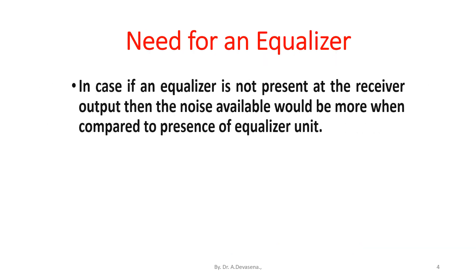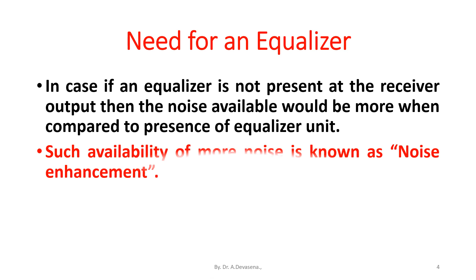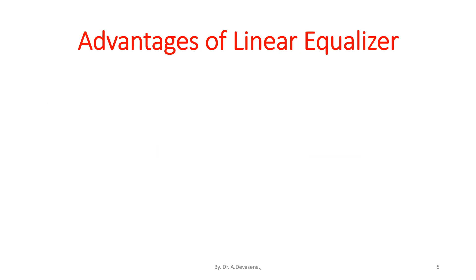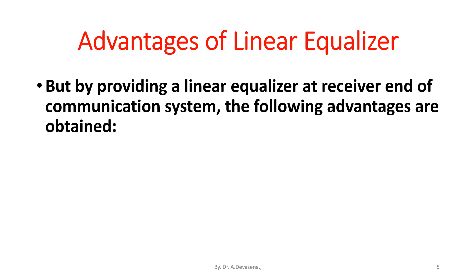If an equalizer is not present at the receiver output, then the noise available would be more when compared to the presence of an equalizer unit. Such availability of more noise is known as noise enhancement. But by providing a linear equalizer at the receiver end of the communication system, the following advantages are obtained.